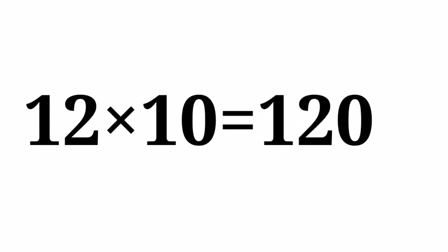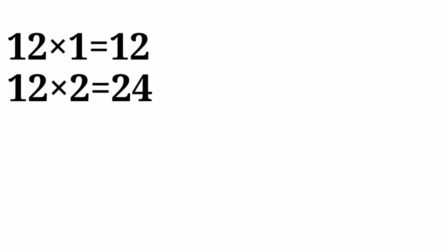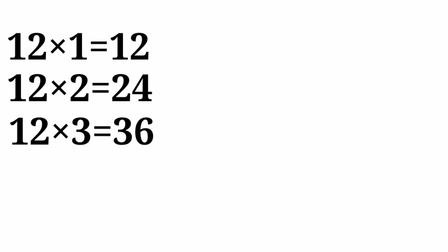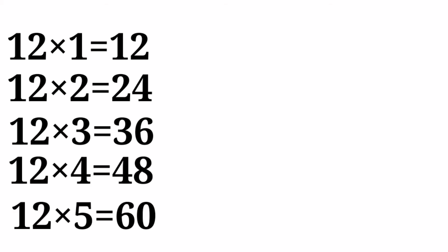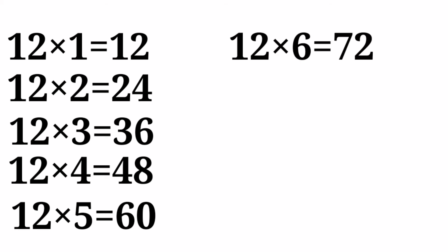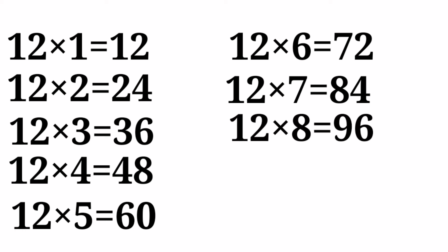12 tens are 120. 12 ones are 12. 12 twos are 24. 12 threes are 36. 12 fours are 48. 12 fives are 60. 12 sixes are 72. 12 sevens are 84. 12 eights are 96.